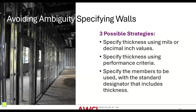Jambs should be double 362S125-33 on both sides of each opening up to 6 feet wide. Daniel is going to talk more about this and has some opinions about how to specify the jambs on openings for interior partitions.